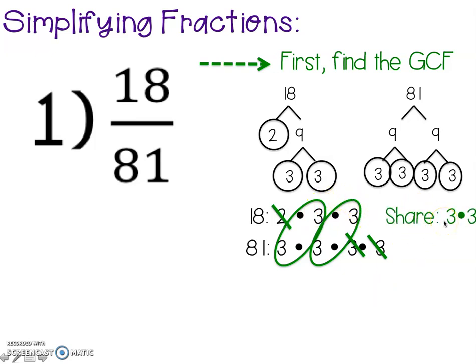To get the greatest common factor, all we have to do is multiply 3 times 3, and that gives us 9. So we're halfway there.